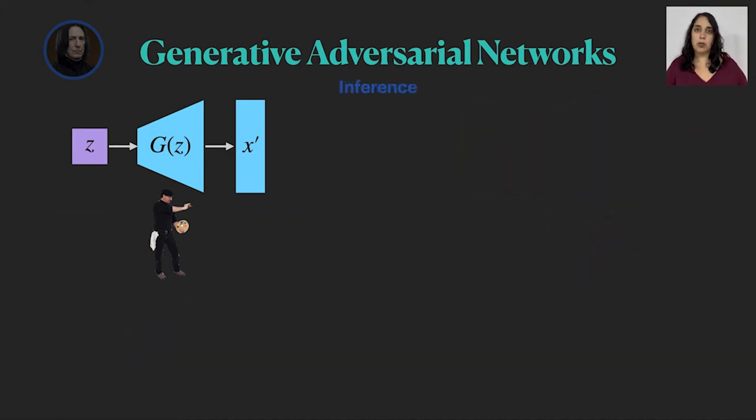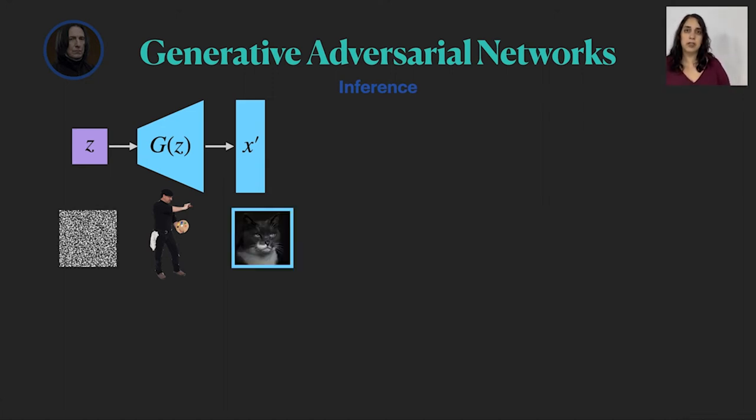And in inference we no longer need the discriminator, we just randomly sample Z and given the generator we generate an image X.